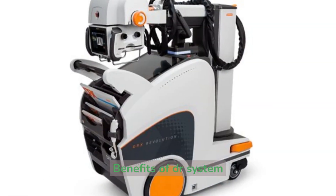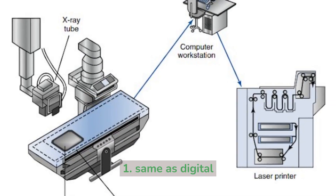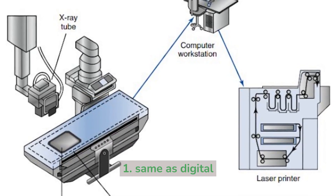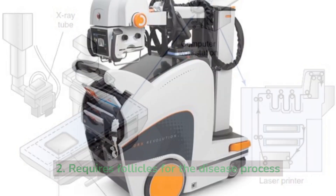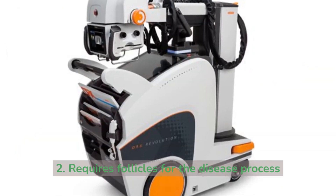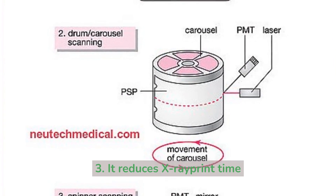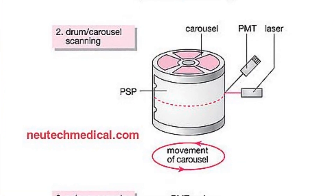Benefits of the DR system. One, same as digital. Two, requires follicles for the disease process. Three, it reduces x-ray print time.